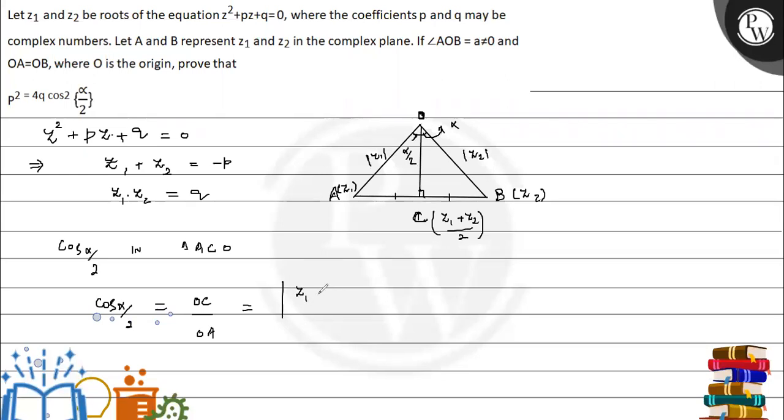magnitude of (z1 + z2)/2. And what will be OA? OA will be magnitude of z1. This equals (1/2) magnitude of (z1 + z2) upon magnitude of z1. Now if you square on both sides,